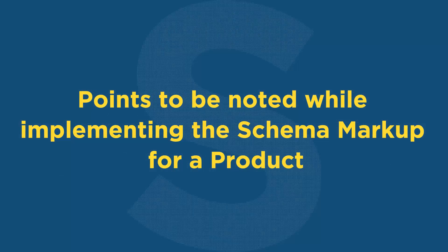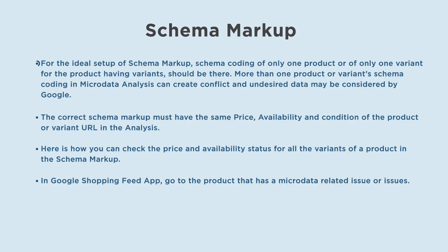Points to be noted while implementing schema markup: for the ideal setup, schema coding of only one product or only one variant should be present. More than one product or variant schema coding in microdata analysis can create conflict, and undesired data may be considered by Google. The correct schema markup must have the same price, availability, and condition of the product or variant URL in the analysis.